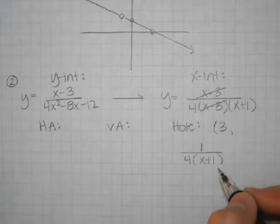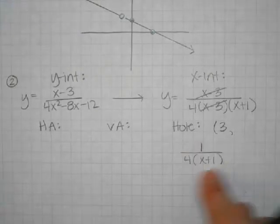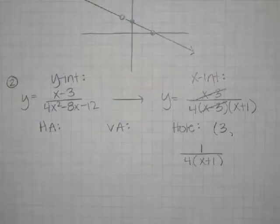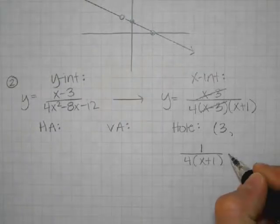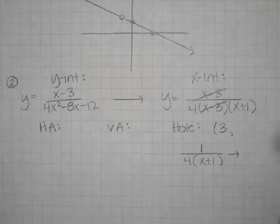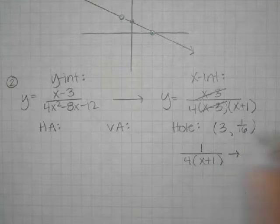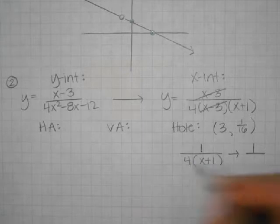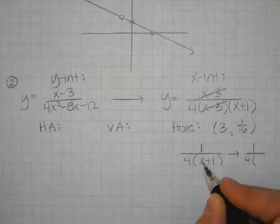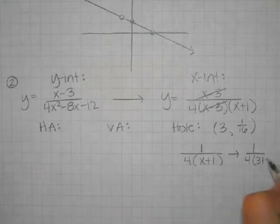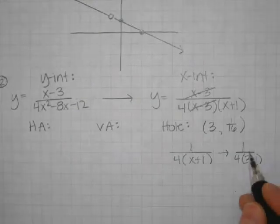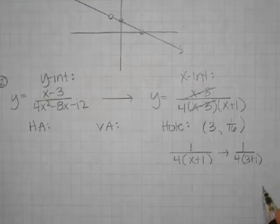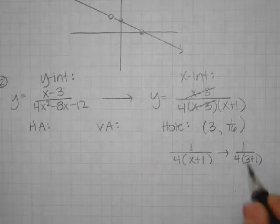Go ahead and take a moment and see if you can find the y-coordinate of the hole using these leftovers. What did you get for the y-coordinate of the hole? 1 over 16. So we have 1 over — we got the 4 right here, and then we're plugging 3 in for x: 3 plus 1. So on the bottom, we have 4 times 4, which makes 16. And 3 plus 1 is 4. So there's the hole.